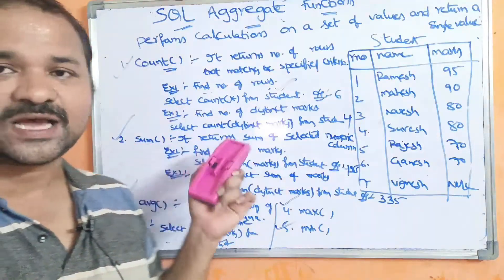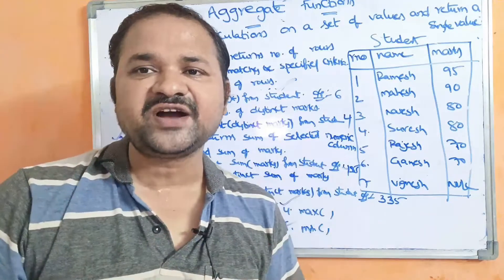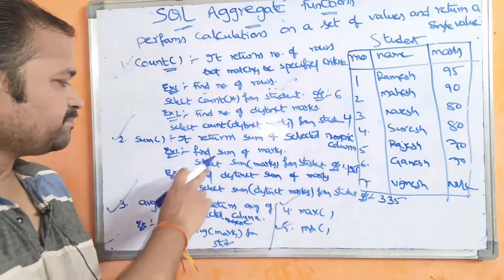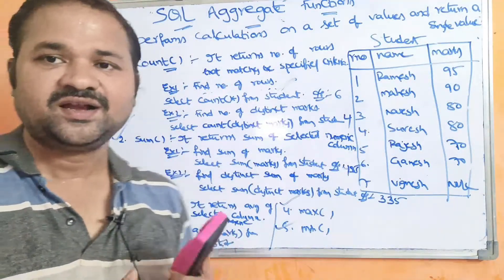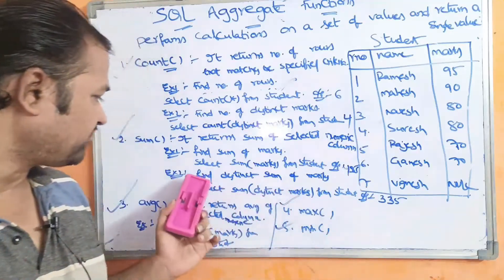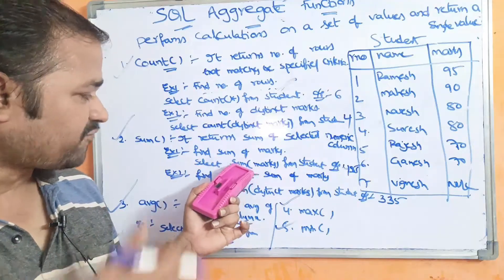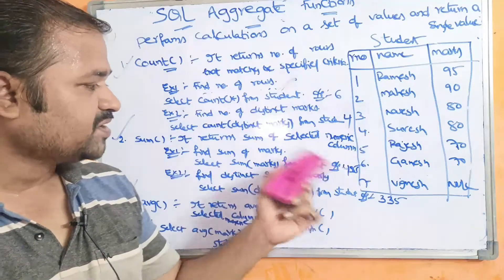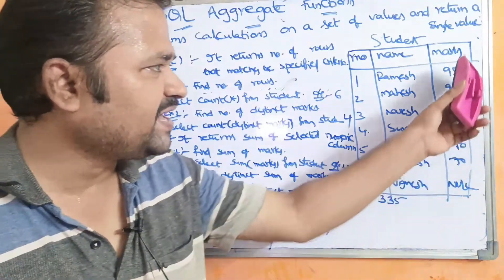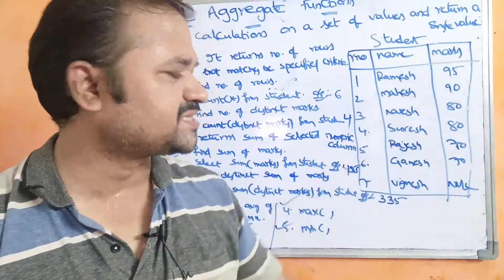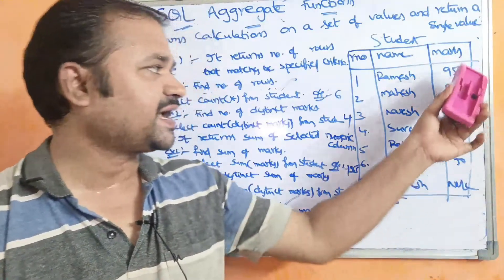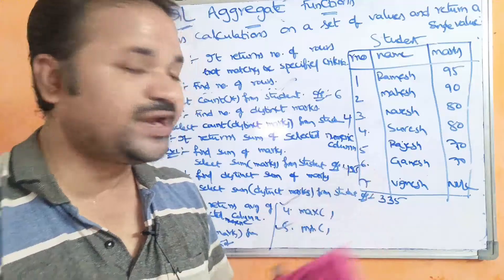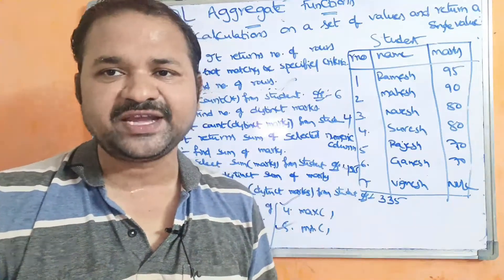Now the sum function example: find the sum of marks. The query is SELECT SUM(marks) FROM student. All these values will be summed: 95 plus 90 plus 80 plus 80 plus 70 plus 70 equals 485. So we get output as 485.